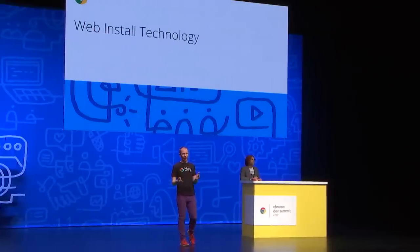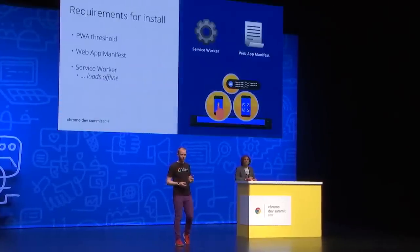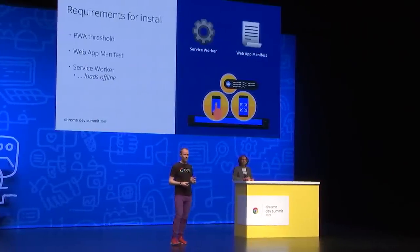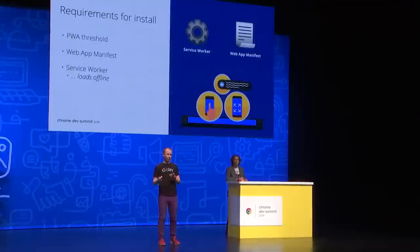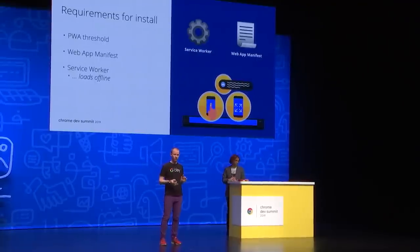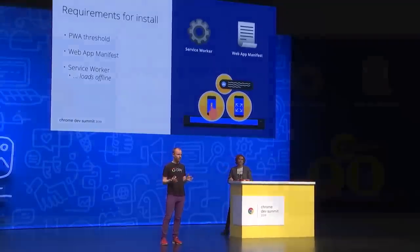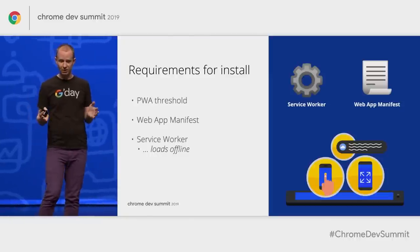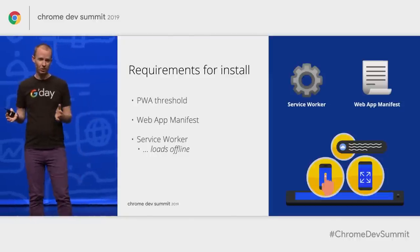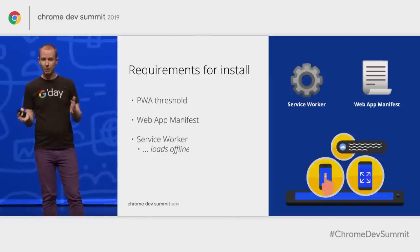So we've covered some of the what and why, and now let's talk about the how of install. Your basic requirements for supporting the installable web are to have both a web app manifest and a service worker. These are actually, in 2019, pretty well documented — and they are the same requirements to be called a PWA.